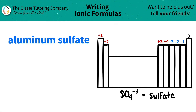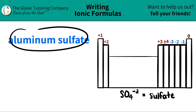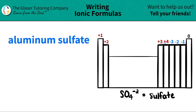Today we are going to be writing the formula for the ionic compound aluminum sulfate. Let's work from left to right to gather the two components of our ionic compound and then we'll take it from there.